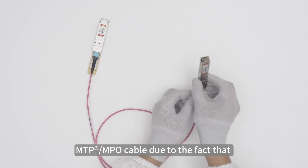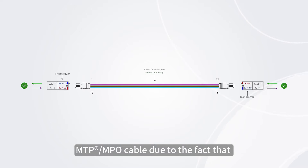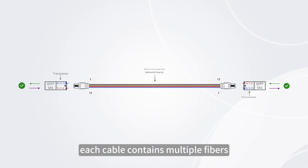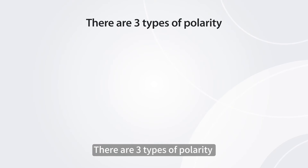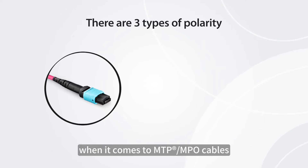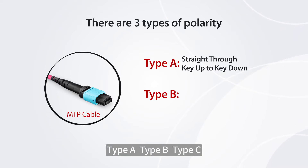The concept becomes more complex with MTP/MPO cable due to the fact that each cable contains multiple fibers. There are three types of polarity when it comes to MTP/MPO cables: type A, type B, and type C.